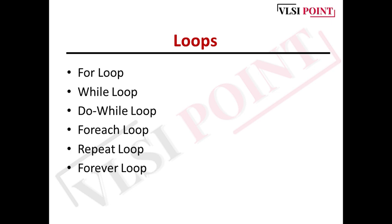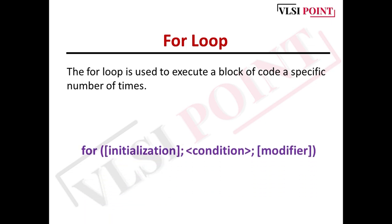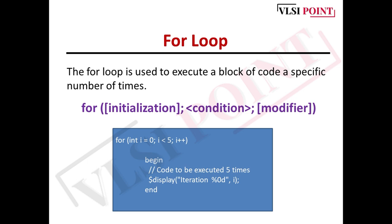Starting with the for loop. The for loop is used when you know the exact number of iterations in advance. It is commonly used for iterating over a range of values, such as iterating through arrays or performing fixed repetitive tasks. The syntax has three parts in brackets: first initialize the variable, then the condition, and then the modifier. For example: for (int i = 0; i < 5; i++).